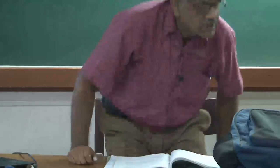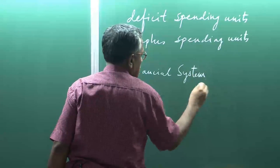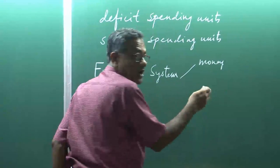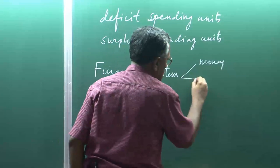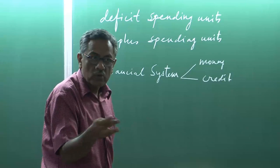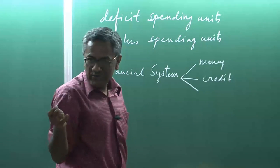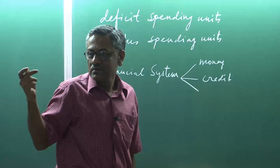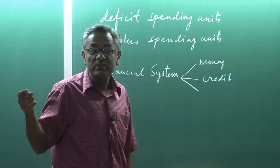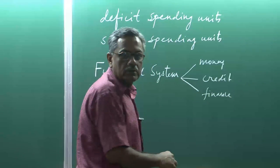What the financial system is concerned about are three broad items: money — which we are trying to define right from topic one, cash etcetera; credit — which originates when somebody lends money like banks to a company; and finance — which is more than credit, and is something most of you are interested in — joining as investment bankers etcetera. Finances exist since the corporate sector came into existence — companies that write LTD at the end, which means they are limited liability companies.